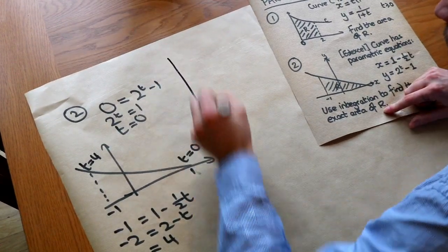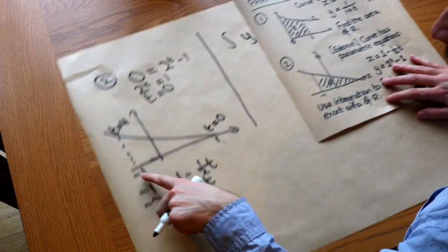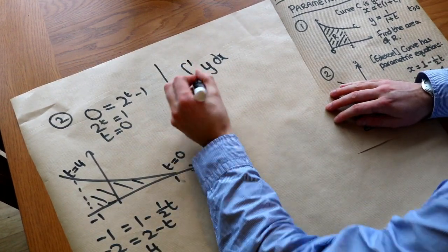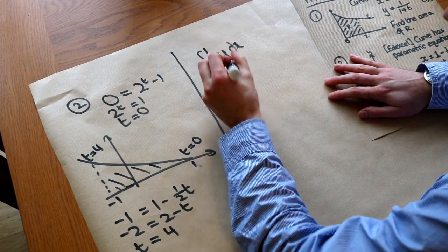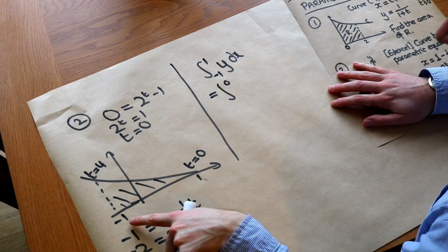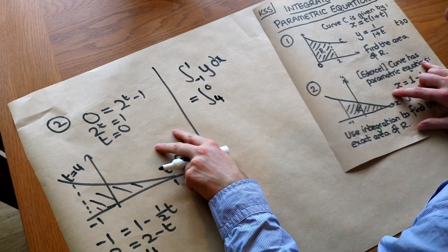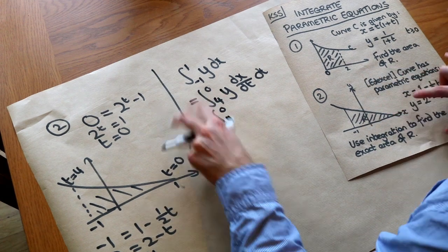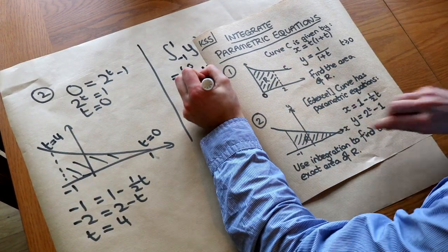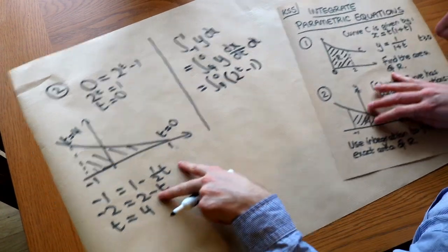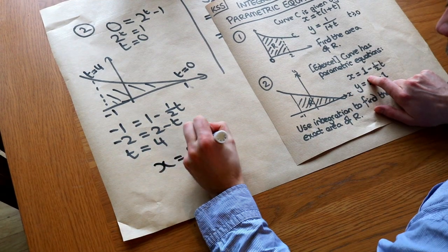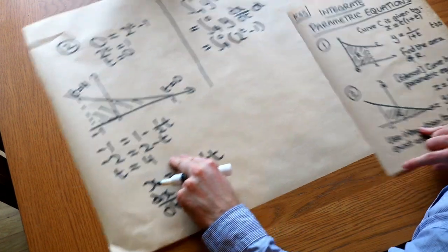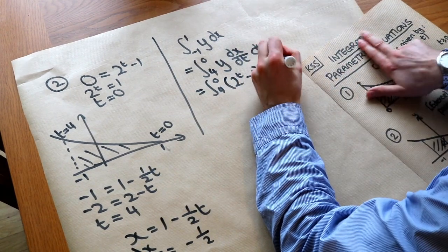So we do the usual thing, we want to integrate y with respect to x, and we're integrating between minus 1 and 1 on the x-axis, but we need to change that into T. So we worked out that when x was equal to 1, the T value was 0, and when x was equal to minus 1, the T value was 4. And then remember that this dx you replace with dx over dt, dt. So let's substitute everything in. The y here is equal to 2 to the T minus 1. The dx over dt, we're going to need to work that out. So if x is equal to 1 minus half T, then dx over dt would be equal to just minus half. So we can substitute that in here, so that's minus half, and then we've got dt.